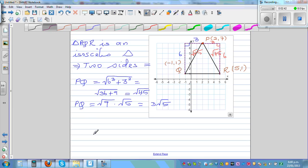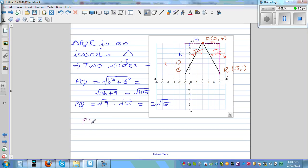So you can see, PQ is equal to PR. This tells me this is an isosceles triangle.